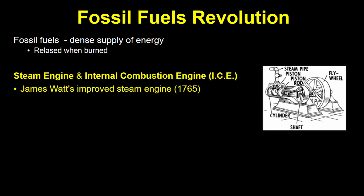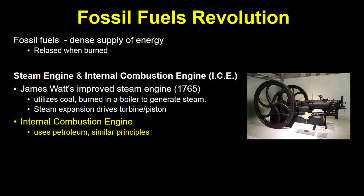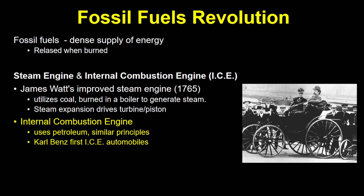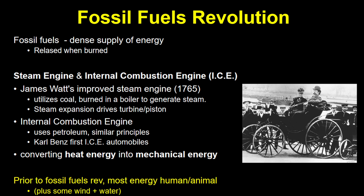The improved steam engine design by James Watt was used early on in the textile industry. A steam engine uses coal, which is burned in a boiler that heats water, which turns into steam and expands. The expansion drives a turbine or piston, which drives the engine. The internal combustion engine follows similar principles and most commonly uses the fossil fuel petroleum. Carl Benz used it to develop the first petroleum-powered automobile. Both of these engines functioned by turning heat energy into mechanical energy. This was a true revolution because before this, the vast majority of activity — agriculture, transportation, manufacturing — mostly relied on human and animal energy, with the occasional help from wind and water.